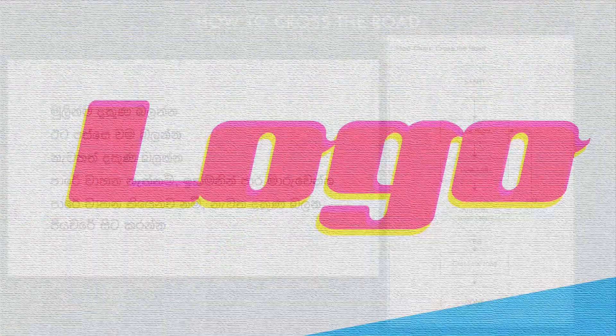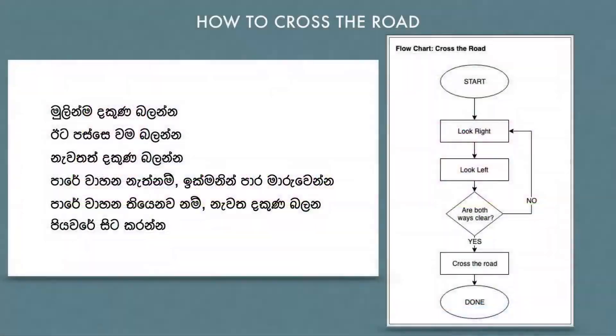For example, let's recall how we were taught to cross the road safely in kindergarten. First, check the right side of the road, then the left and again the right. We cross the road if both ways are free of vehicles. If not, we should repeat from the first step until it's safe to cross.